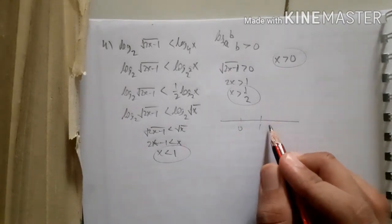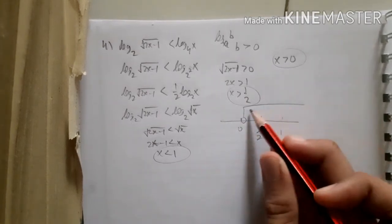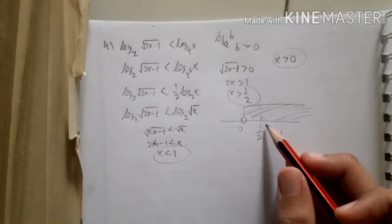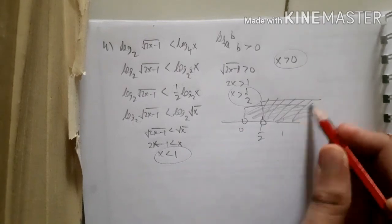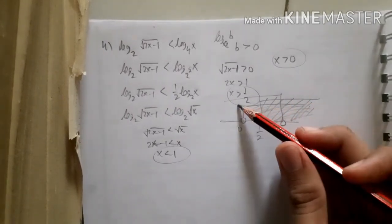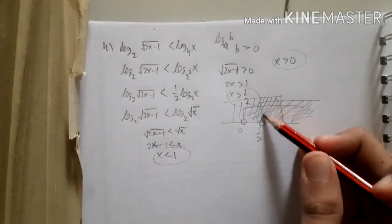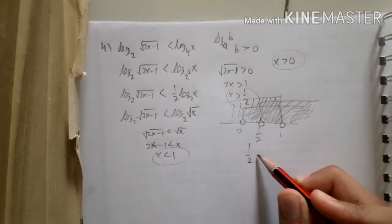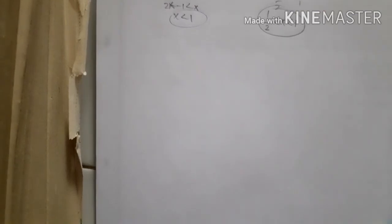Plotting all conditions on a number line — x > 0, x > 1/2, and x < 1 — the overlapping region (darkest shade) gives the final answer: 1/2 < x < 1. This is the solution to the logarithmic inequality in problem 4.